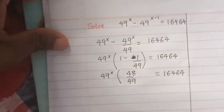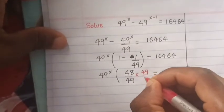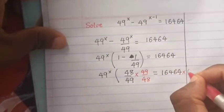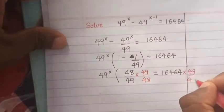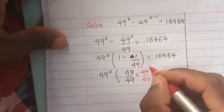Then we multiply both sides by 49 over 48.